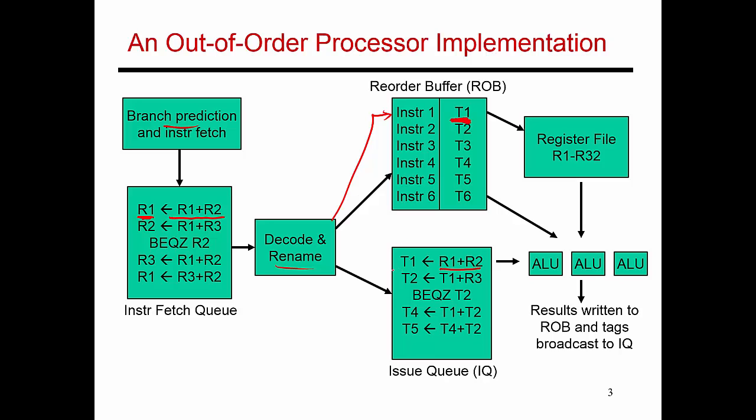And so that's why the destination gets renamed to T1. Then you look at the second instruction, it says I'm using R1 and R3. So R3 is just as usual, but this R1 refers to the value that was produced by the previous instruction. And that value R1 or that name R1 just got renamed to T1. So instead of getting my input from R1, I'm going to get it from T1.